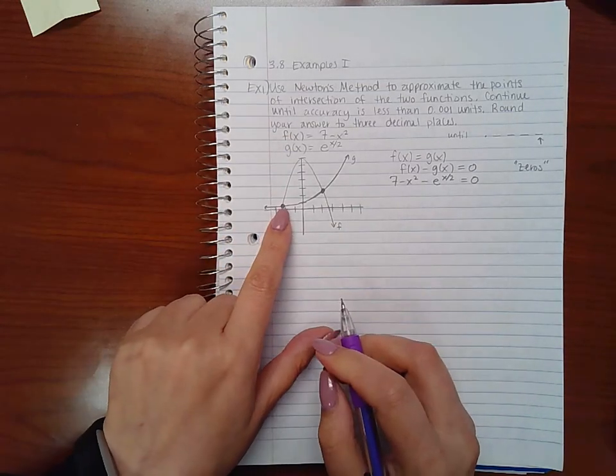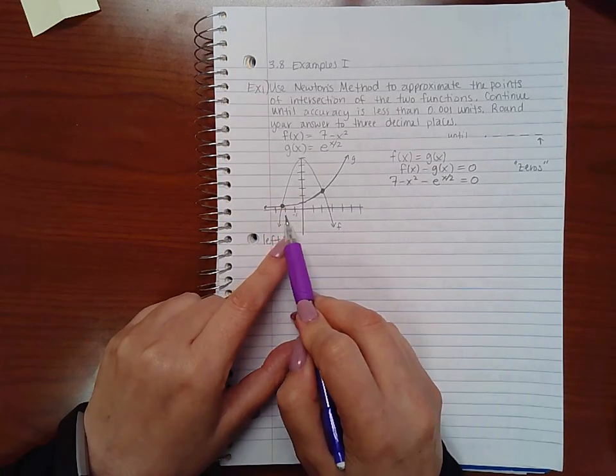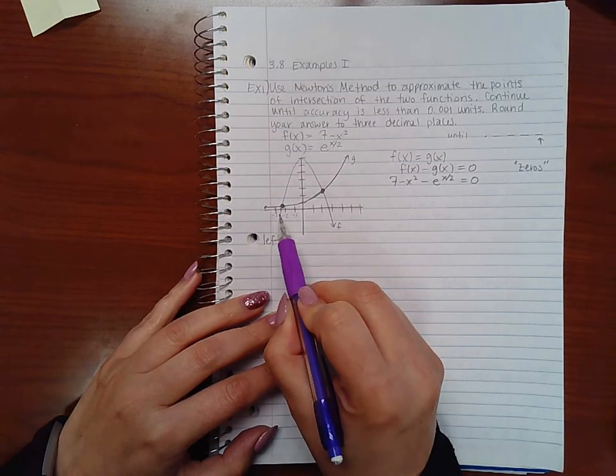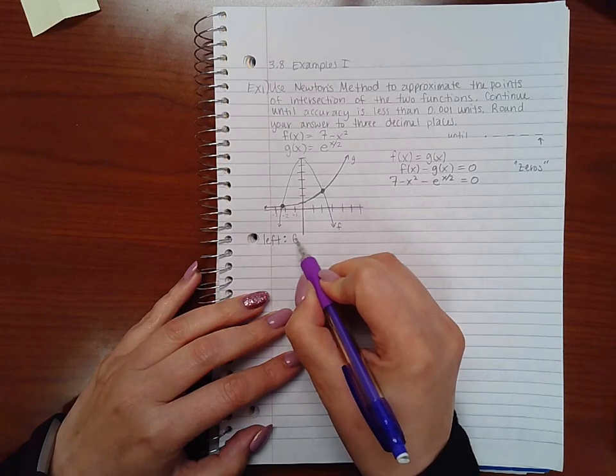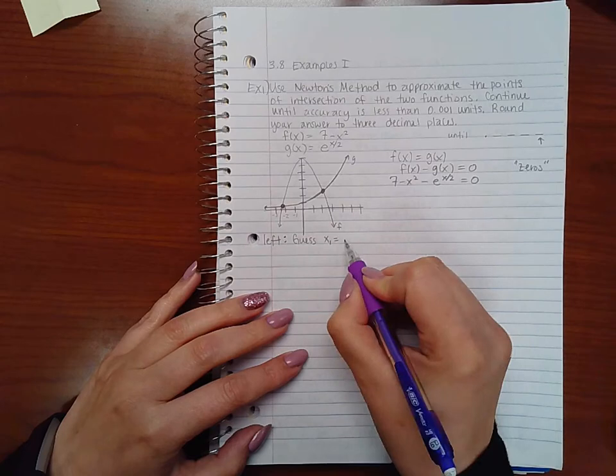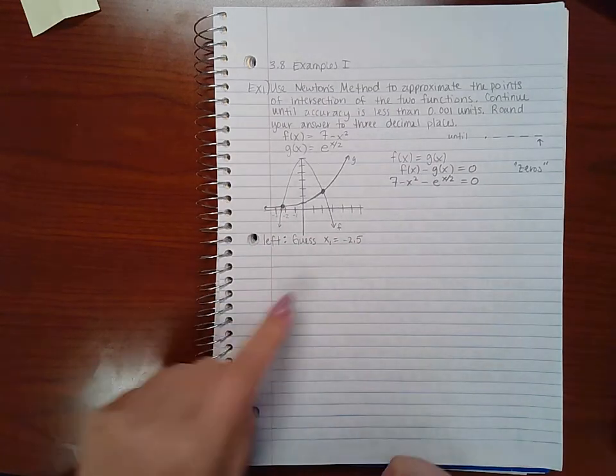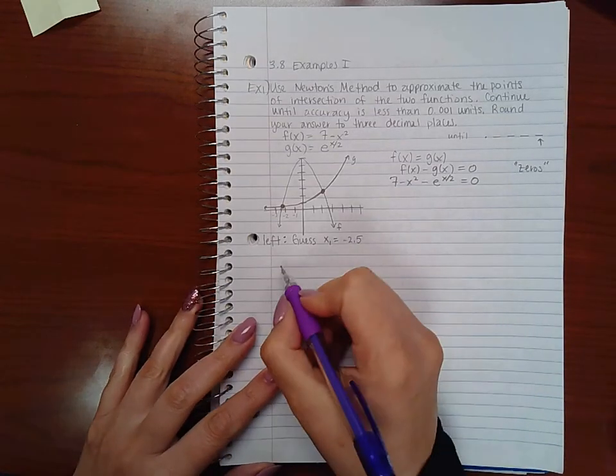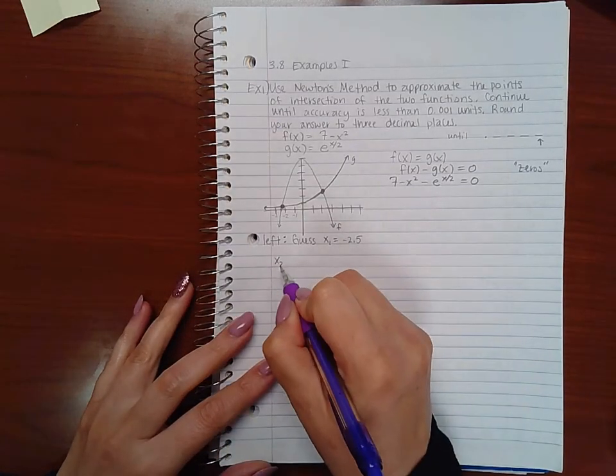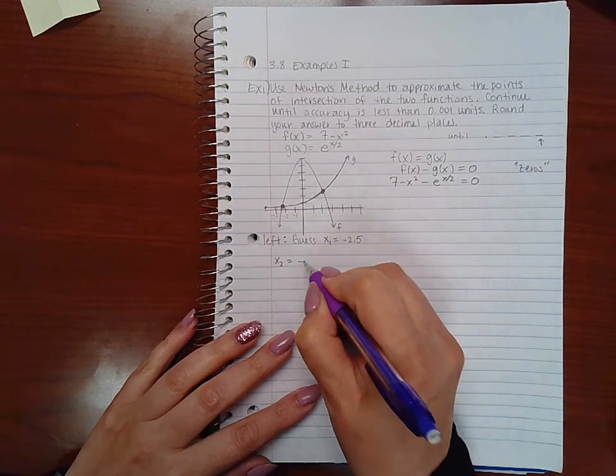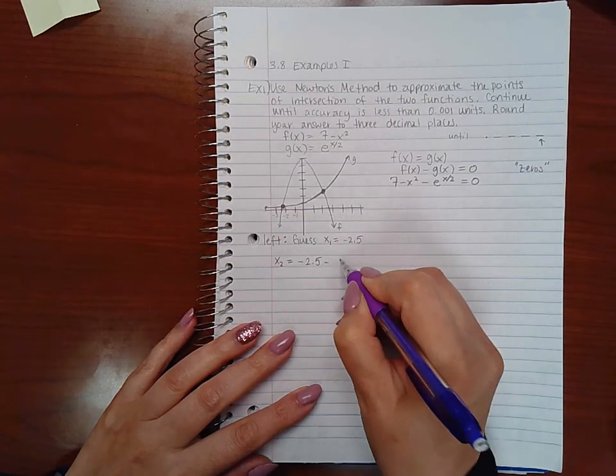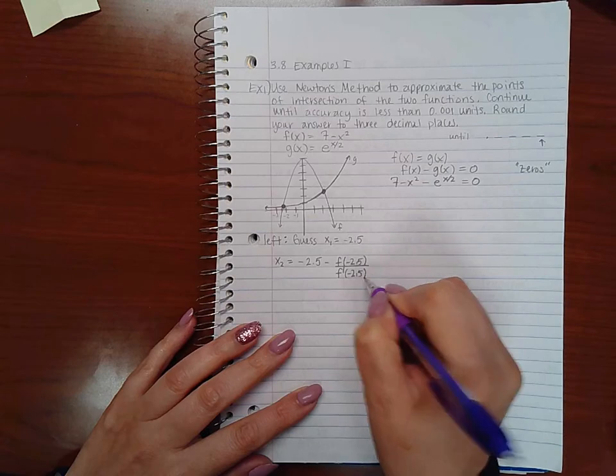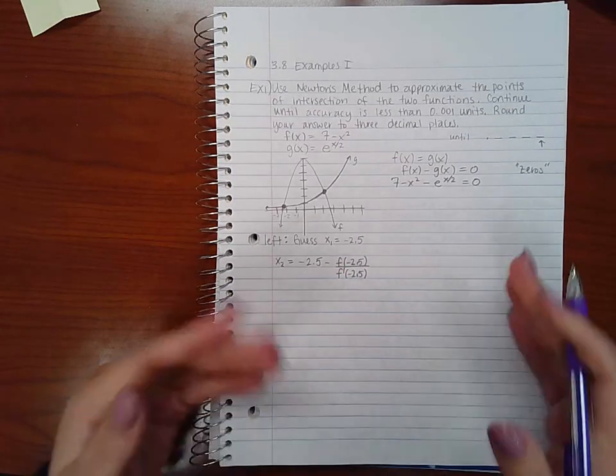So the zero or the intersection on the left looks like it's pretty close to negative two. And it may even be, if I want to get even more accurate, pretty close to maybe negative 2.5, right? Just to get it because it's a little bit closer to negative 2.5 than it is to negative two. So if I want to find x2, my second estimate, I will have to do -2.5 minus f of negative 2.5 over f prime of negative 2.5.